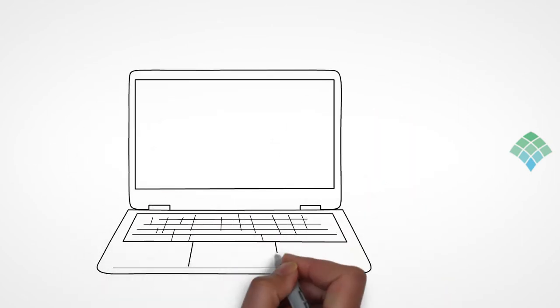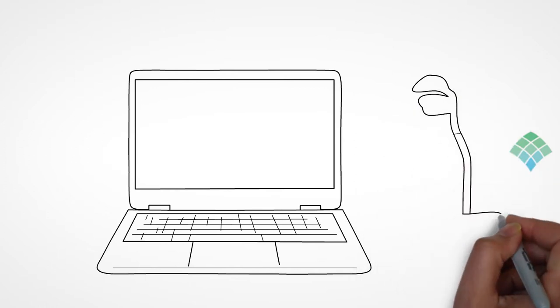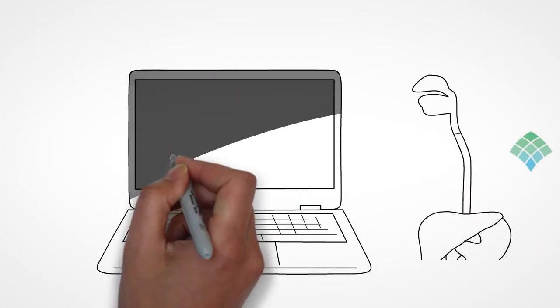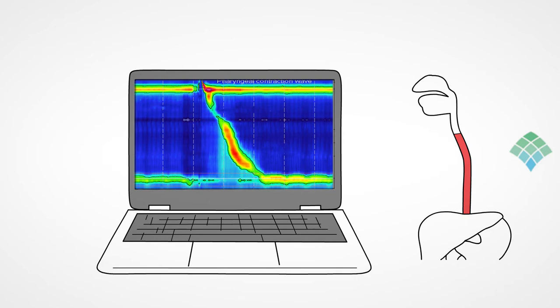Esophageal manometry is a test used to measure the function of the esophagus and esophageal sphincters. Manometry provides information about the strength of the contractions, muscle coordination, and the functioning of the sphincters.